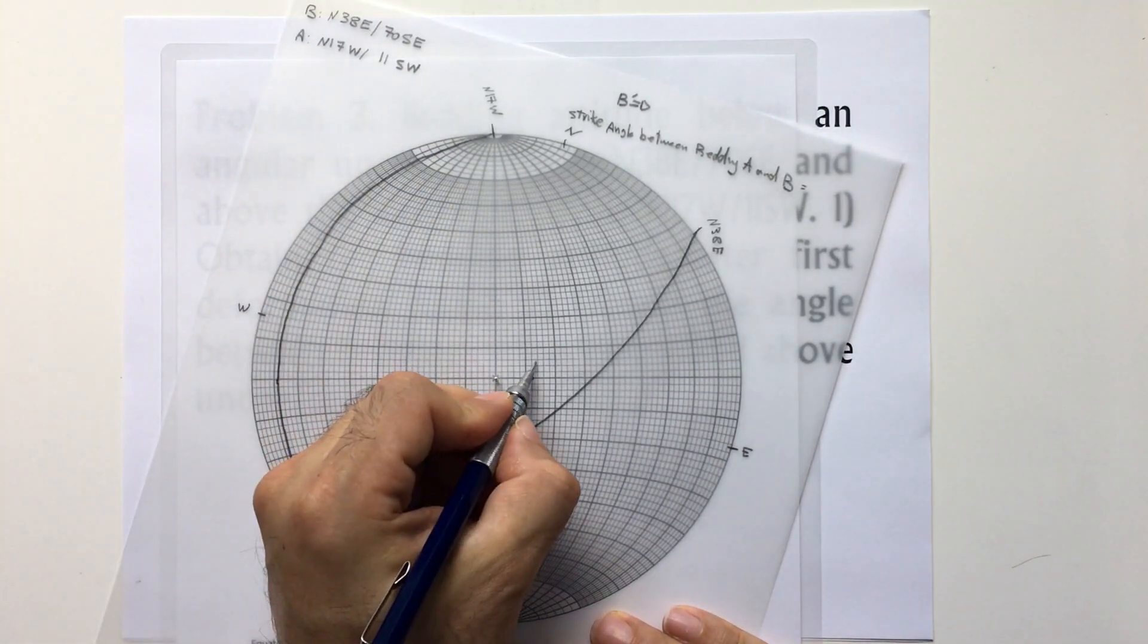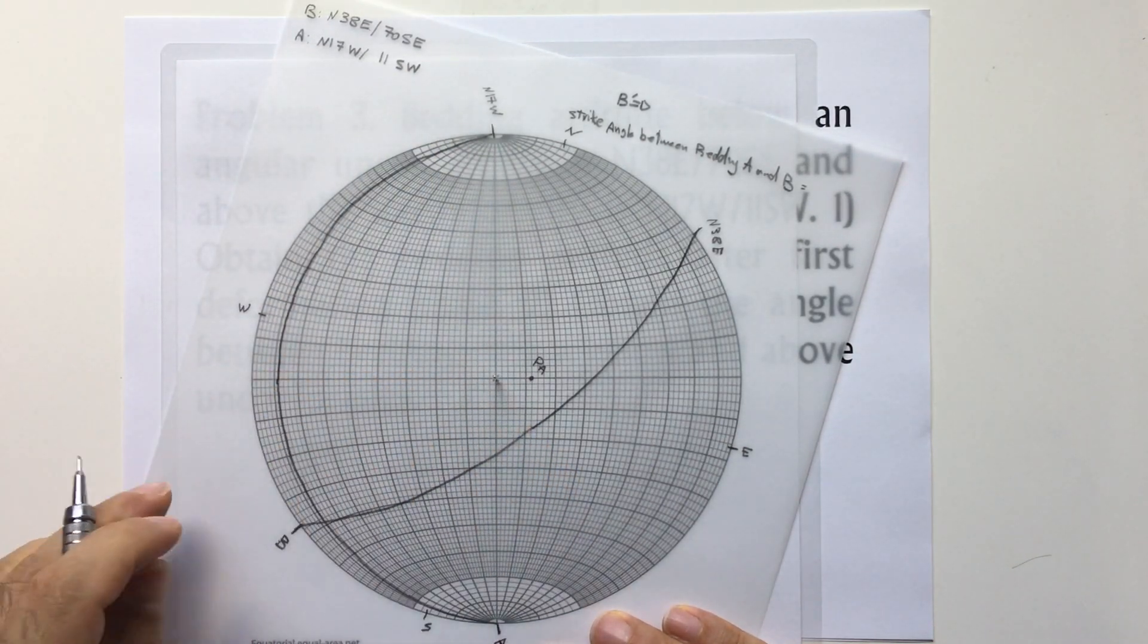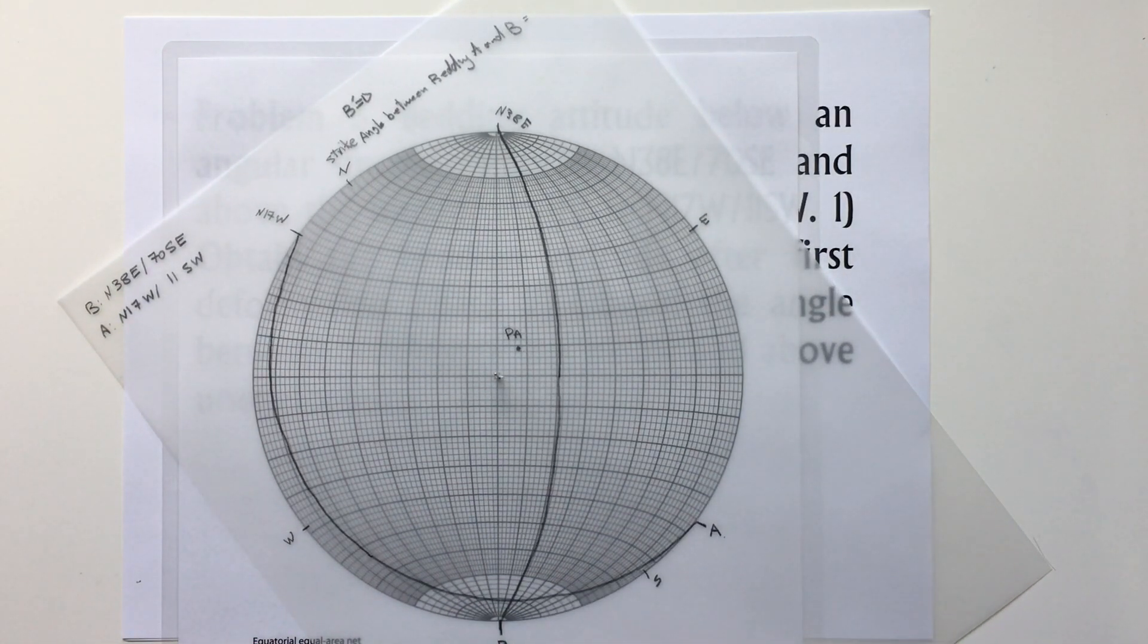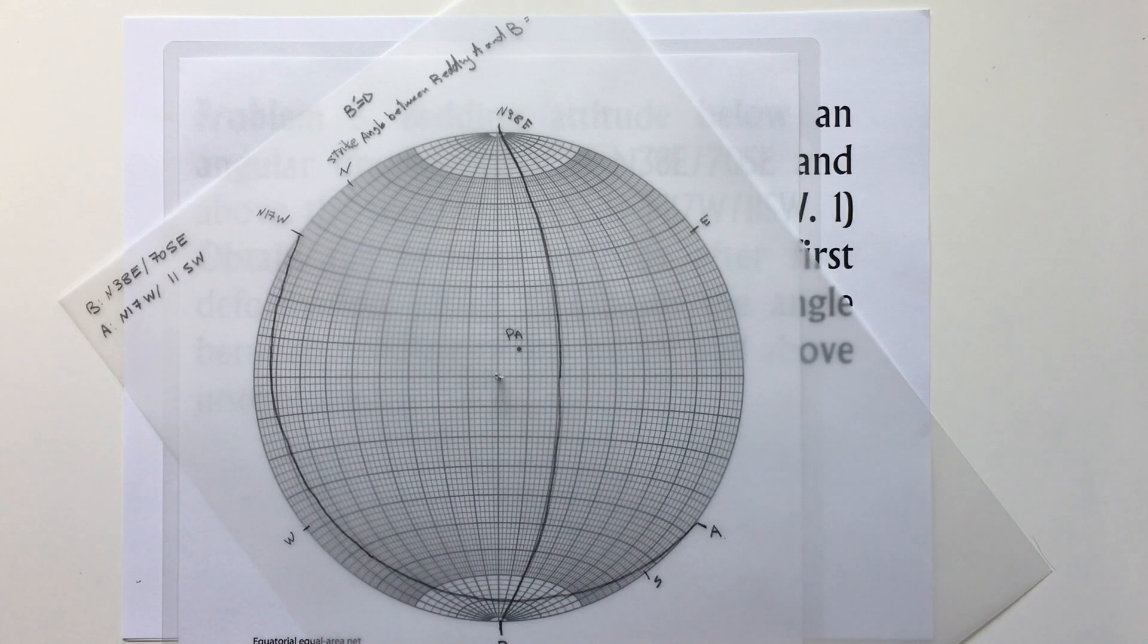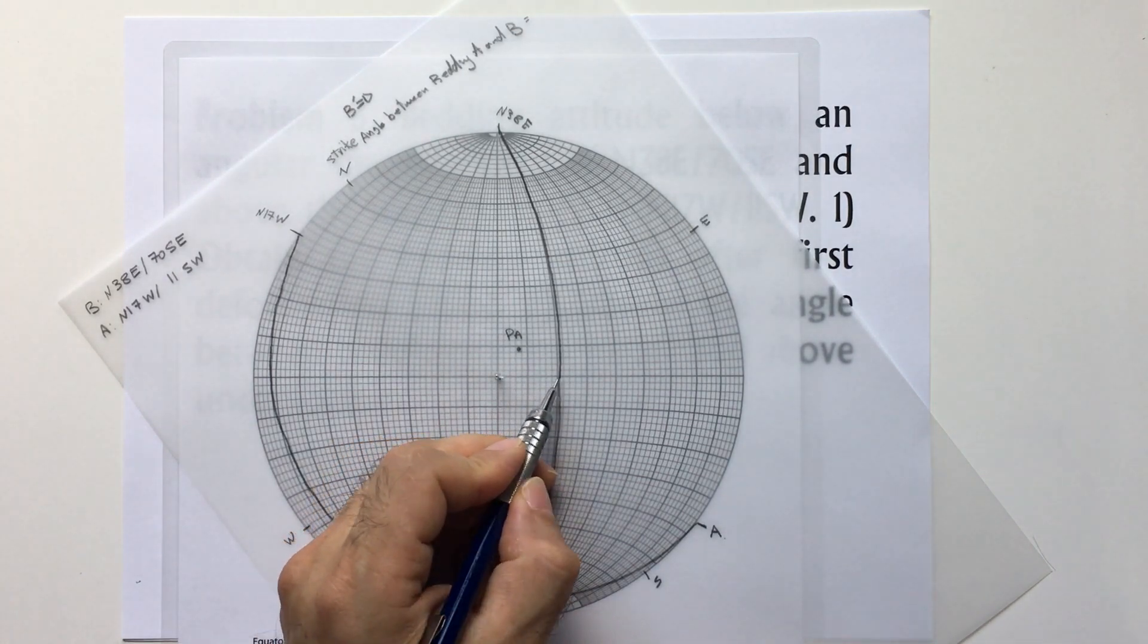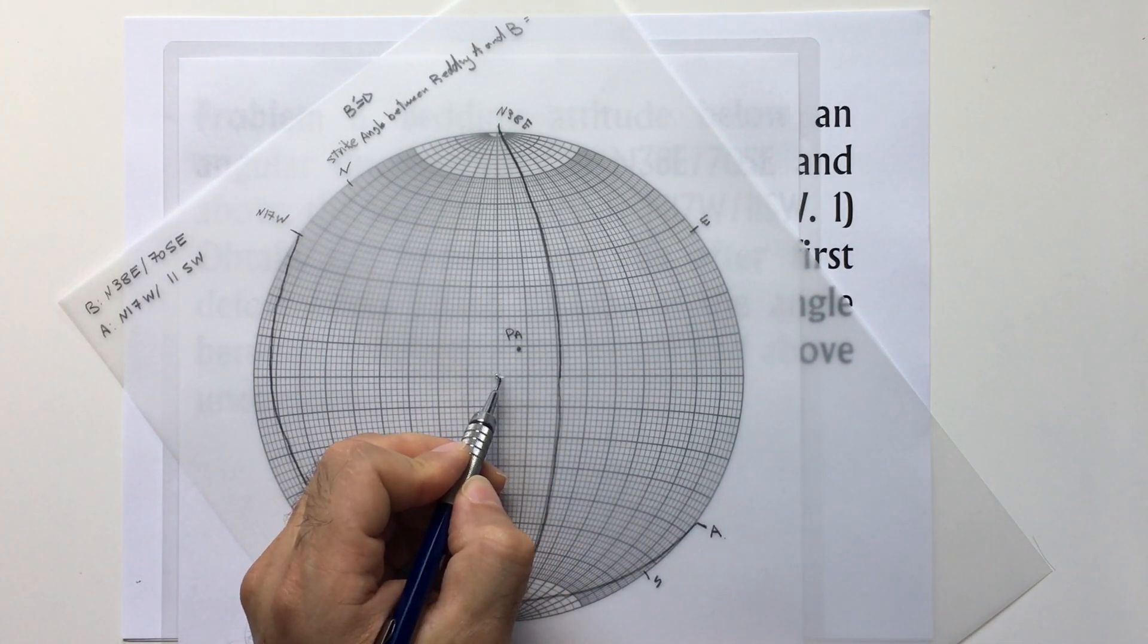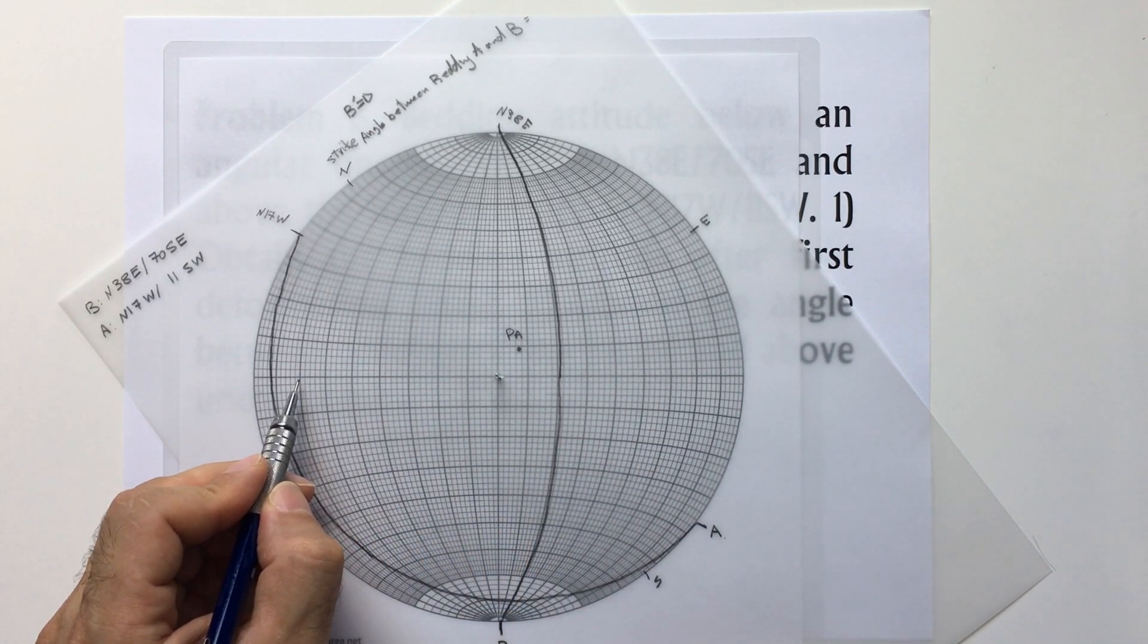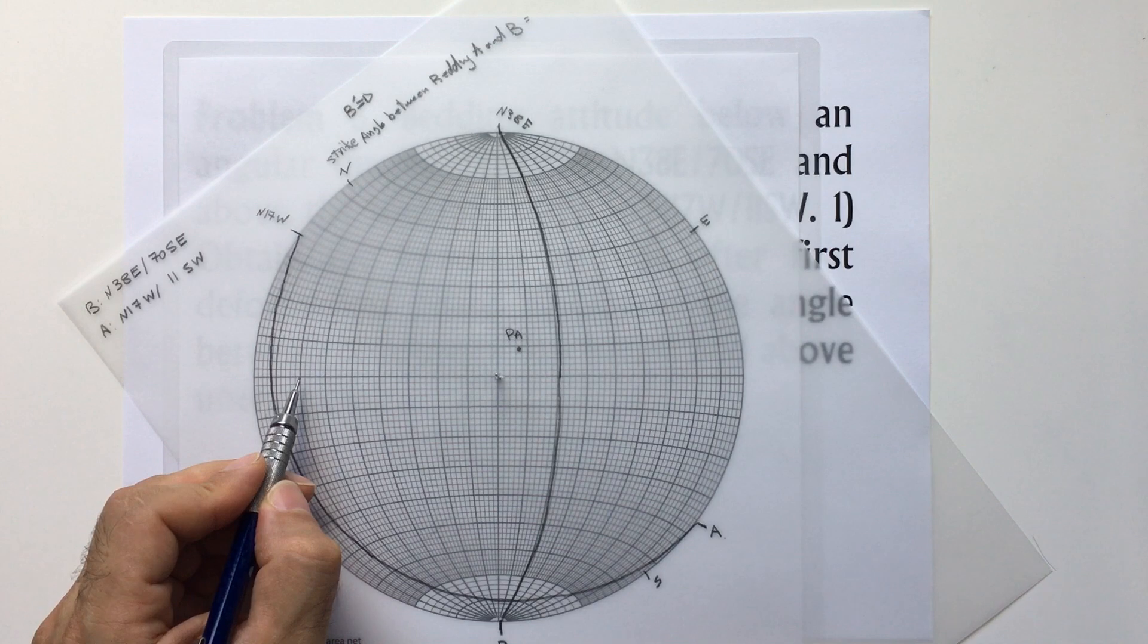And the second one: 20 degrees from here, another 70, it's going to end up to the pole of B.